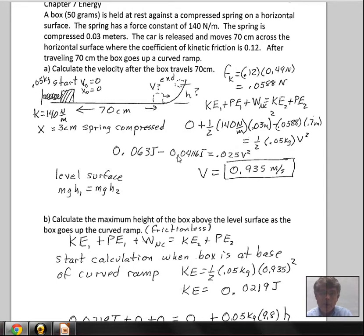So on the left side, we calculate the spring's potential energy. Here's the energy lost to friction. Subtract those two. One half of 0.05 gives us 0.025. So do the subtraction, divide by 0.025, take a square root, and I find 0.935 meters per second. That would be the velocity at the end of the 70 centimeters of travel on this surface that has friction.